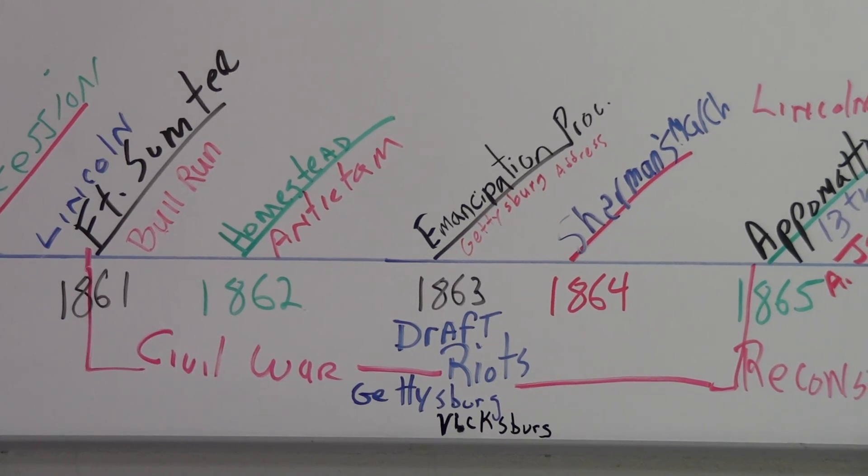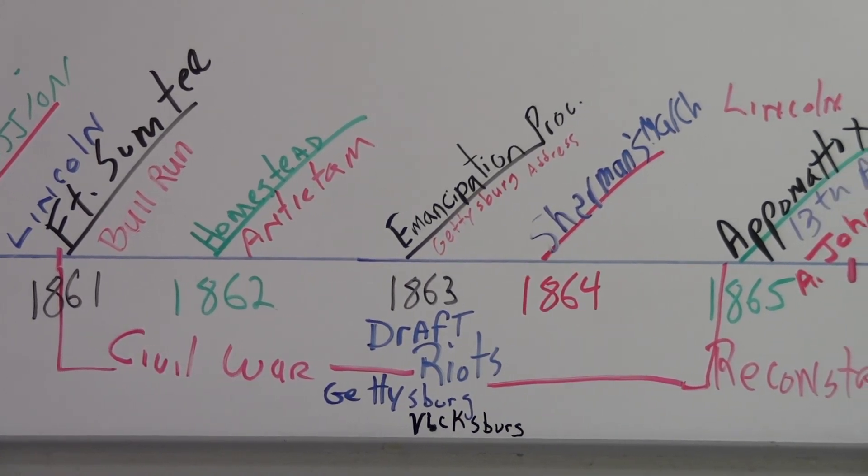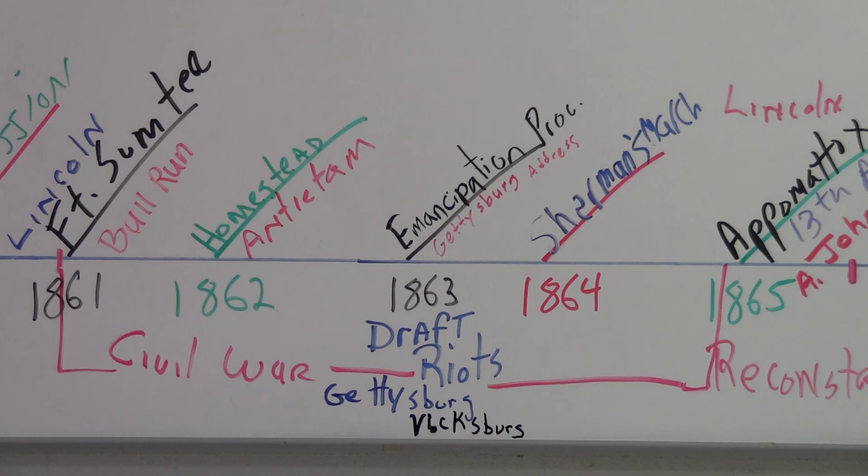In 1862, President Lincoln will pass the Homestead Act, trying to be more than just a war president, thinking forward past the war. He'll also pass the Pacific Railway Act. The Pacific Railway Act is how we're going to get them there. Homestead Act is going to give a lot of land at free or no cost to people as they head west. Also in 1862, we're going to have the Battle of Antietam.